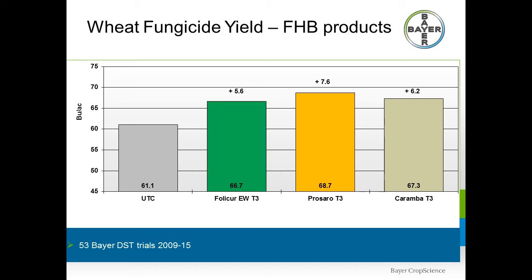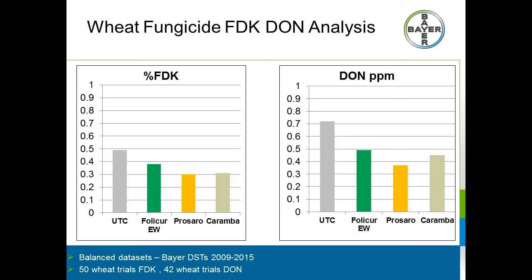Looking at FDK and DON reduction from our trial database dating back to 2009, in the case of DON reduction we can see upwards of a 50% reduction in vomitoxin. Like I said before, these products are still not bulletproof, and we do see some varying levels of performance. Talk to your local salespeople and try to find some local results to get a better handle on what these products will do in your local marketplace.